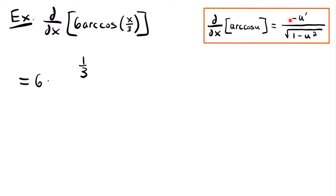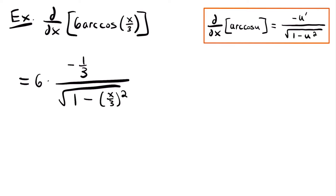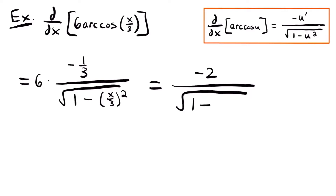Don't forget the negative — we have to negate that derivative, so that will be negative 1/3, divided by the square root of 1 minus u squared, where u is x divided by 3, so that gives us (x/3) squared. Simplifying, we multiply 6 by negative 1/3: 6 divided by 3 is 2, so this equals negative 2 divided by the square root of 1 minus (x/3) squared. Squaring x/3 gives x squared divided by 9.